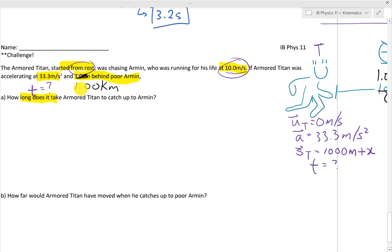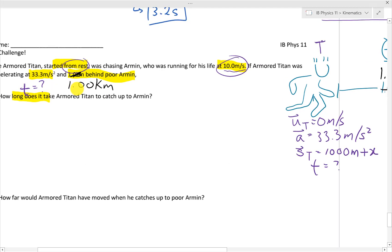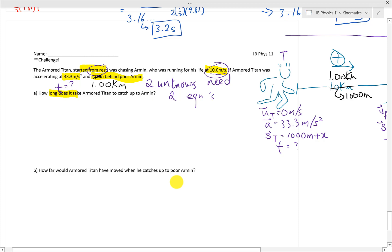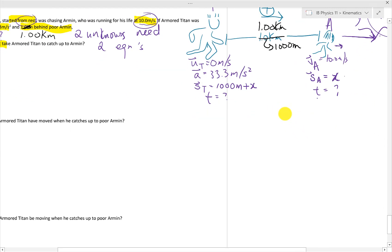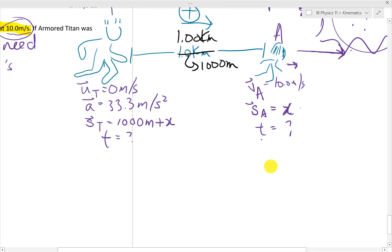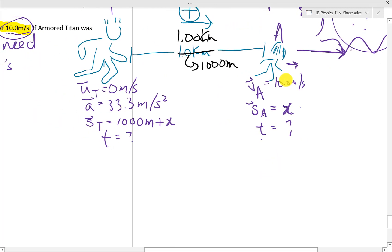So when we have two variables, we have two unknowns, what we need is we need two equations to solve for that. But this is a little bit more complex than the things we've dealt with before. So how do we come up with these two equations to describe motion? Well, let's start with Armin and the Armored Titan.